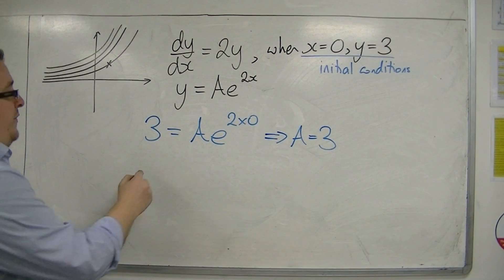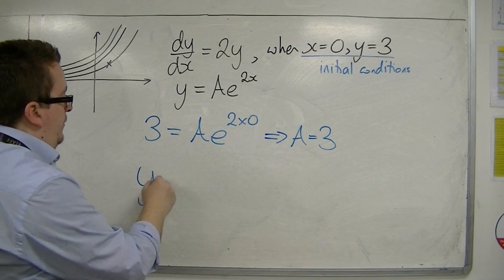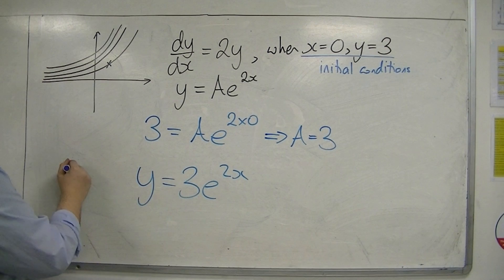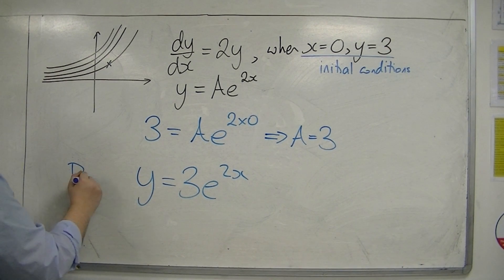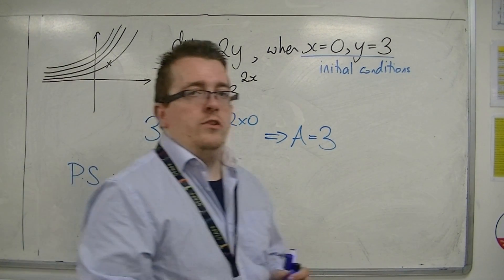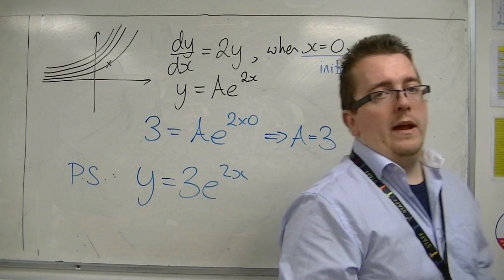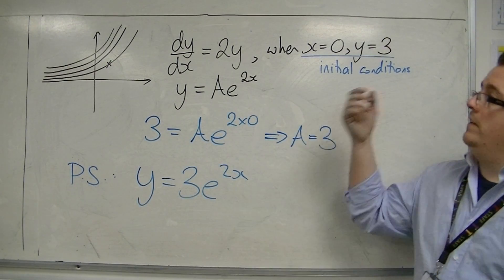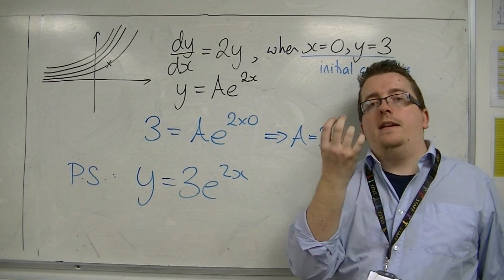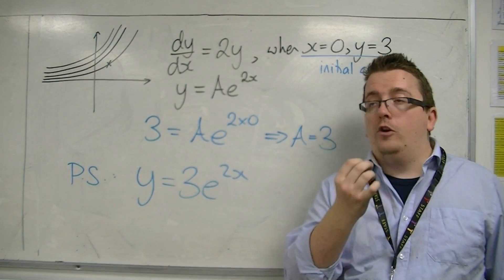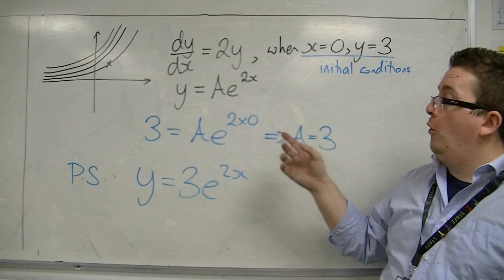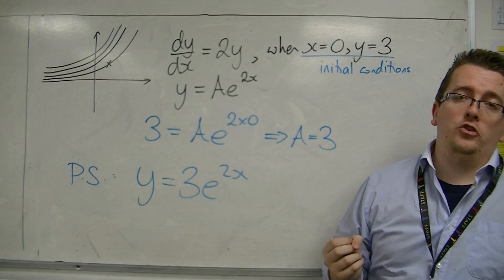So the particular solution is y is equal to 3e to the 2x. That is how we apply the initial conditions — it is specifying one of the particular curves from a whole family of solutions.